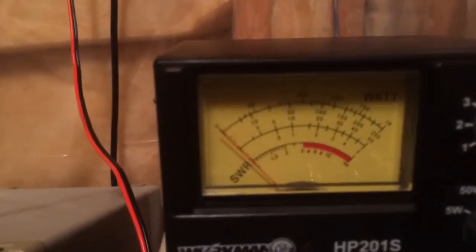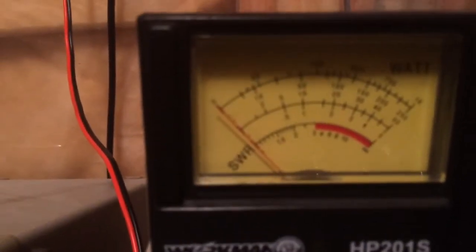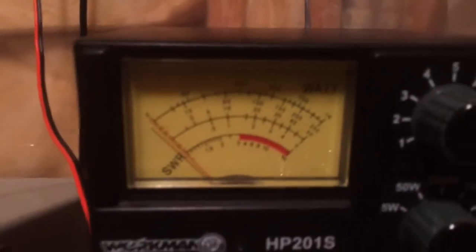So comparing that to the antenna analyzer I was measuring an SWR greater than 5, and now with the inline SWR meter I'm measuring about 1.5, 1.6. So considerable difference.